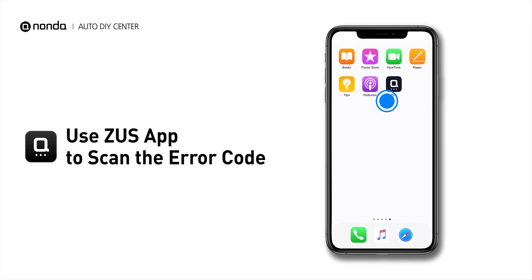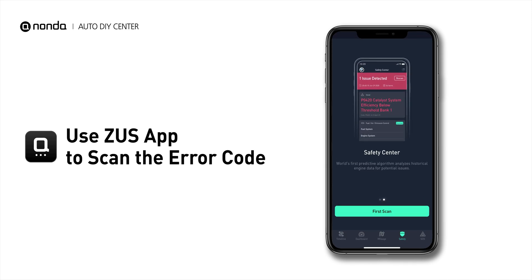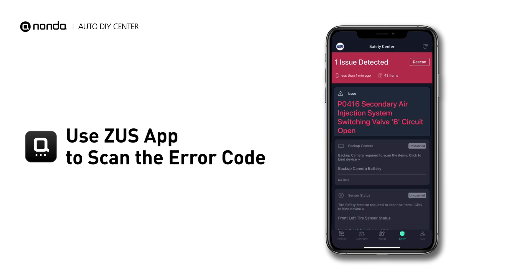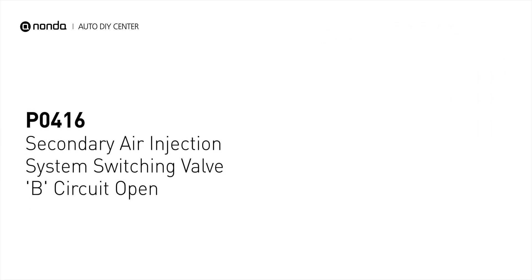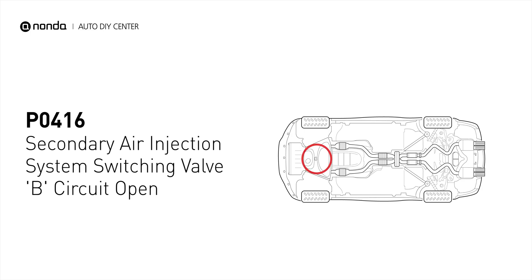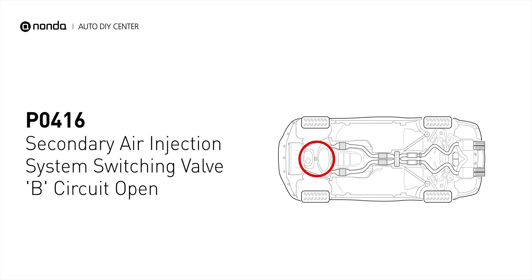Use the Zeus app to scan your vehicle and see the error code PO416. It indicates that the engine control module got input from the air injection system driver that the air pump has a malfunction with an open circuit.